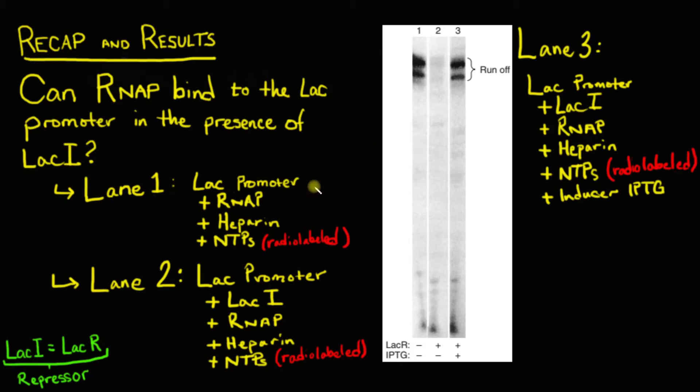So to answer this question, the authors performed the experiment I just described, and they performed it in three different ways, as is evident by these three different lanes in this figure. The first lane corresponds to an experiment where they took the lac promoter, they added RNA polymerase immediately without any repressor present, after which they added heparin to scavenge any free-floating RNA polymerase, and then your radiolabeled NTPs. And then when they ran this gel, they were able to visualize the radiolabeled RNA transcripts, and they found that there were these two large heavy bands up here at the top of the gel. These correspond to large runoff transcripts.